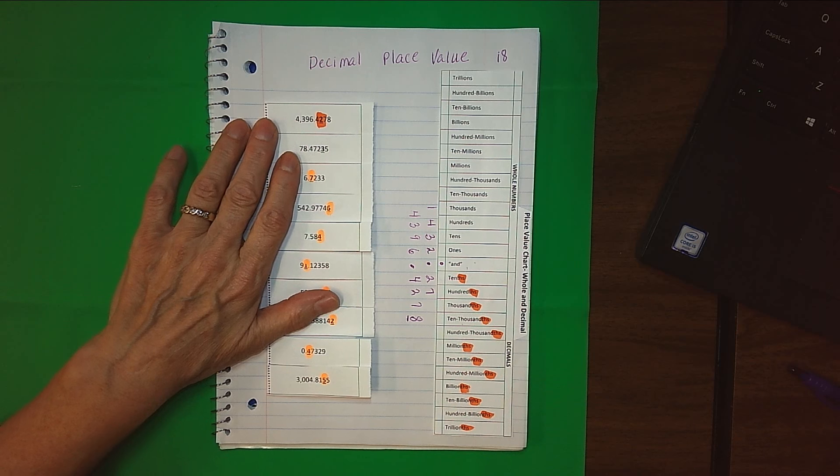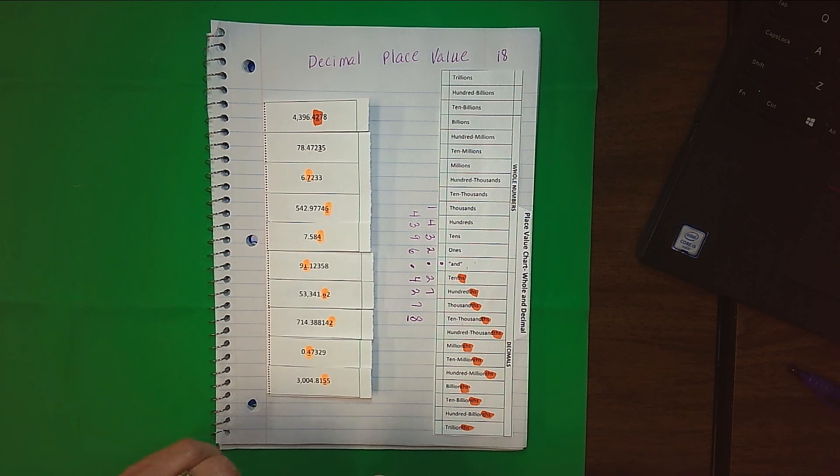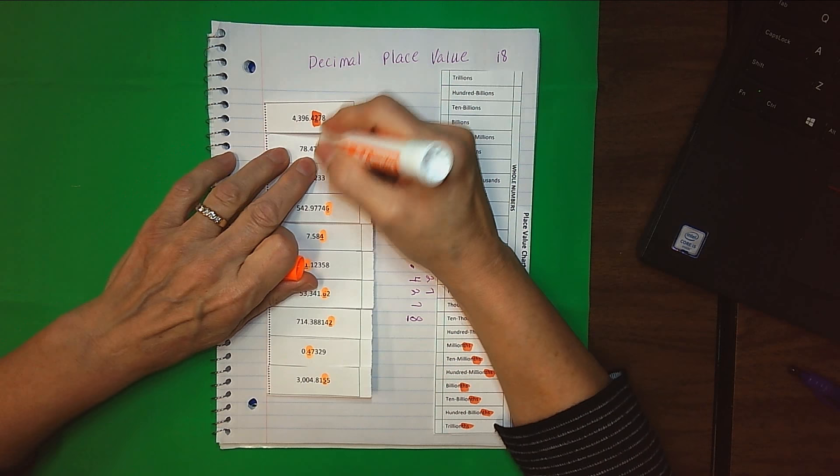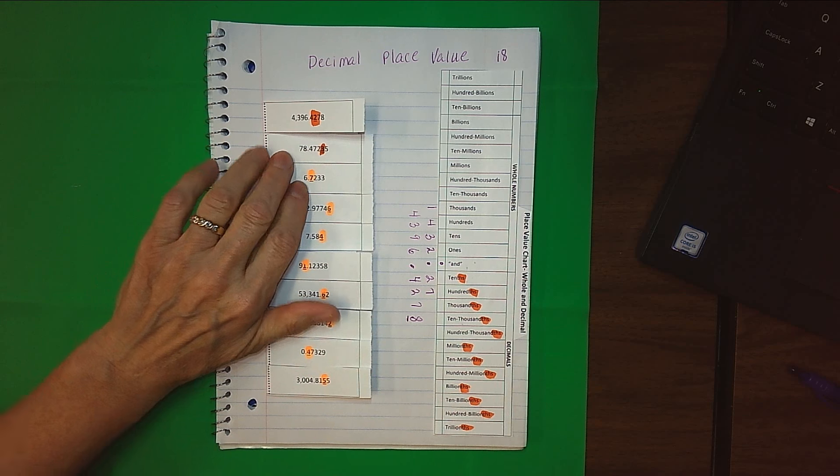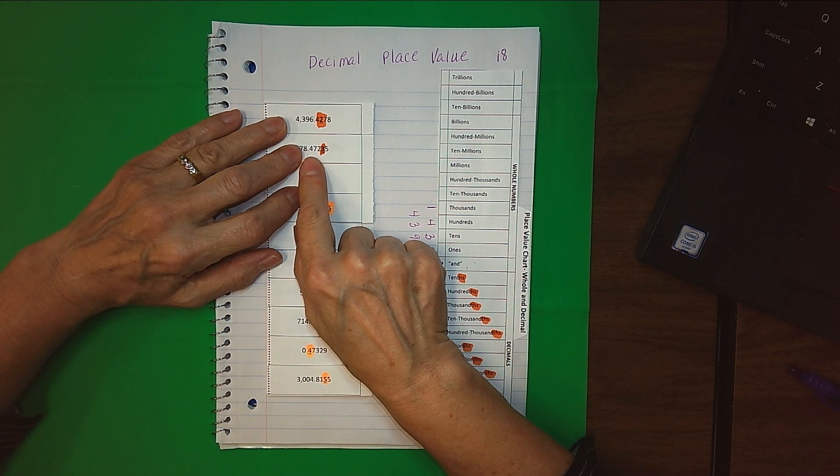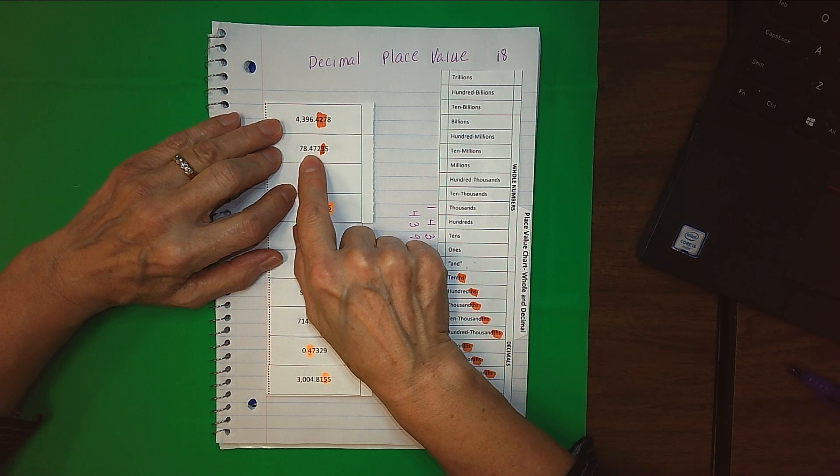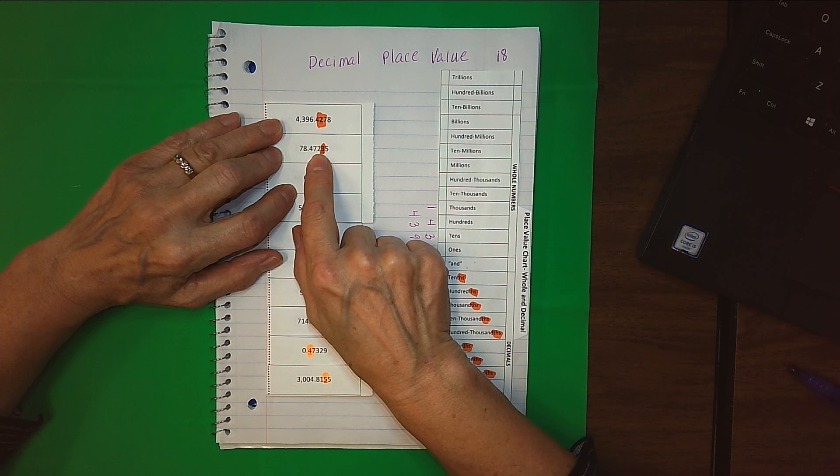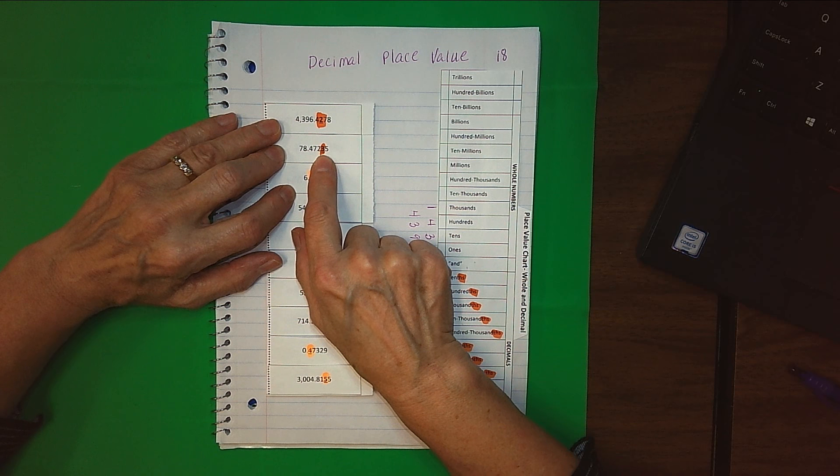Our next place value to identify is this three right here. I'm going to practice without the place value chart and see how I do. I know that the number right after the decimal point has to be the tenths. If I follow that pattern: tenths, hundredths, thousandths, ten thousandths. So I think it'll be the ten thousandths place. Let's check ourselves.